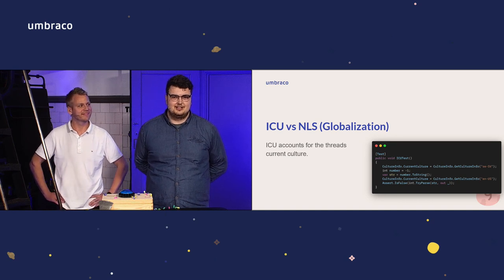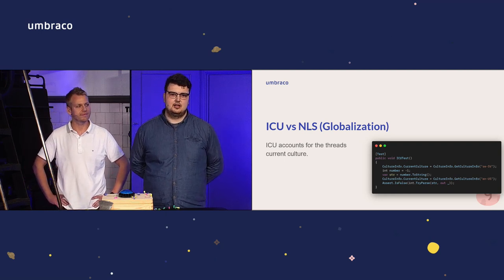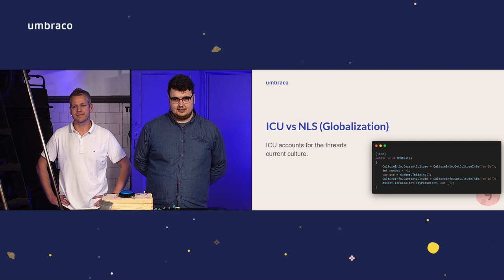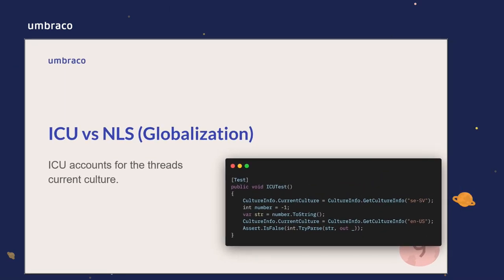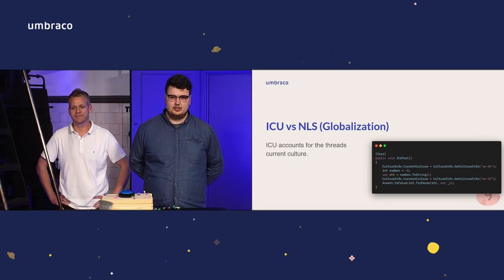Let's talk about globalization. In .NET Framework we use NLS (Natural Language Support), and Unix used ICU (International Components for Unicode). In .NET 5, ICU is the standard for everyone, and this comes with some growing pains. In the example, ICU accounts for the current culture. We set culture to Swedish, make an integer of minus one, pass it to a string, then change culture to US and try to parse the string back to an integer. In .NET 5 this will fail because we account for the culture — the Swedish minus sign is slightly different from the US one. But in .NET Core 3.1 or .NET Framework, this passes just fine.